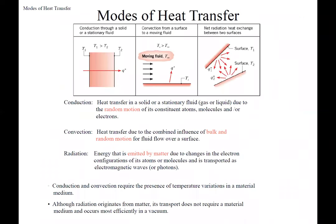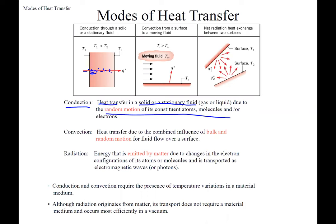The modes of heat transfer are conduction, convection, and radiation. Conduction is heat transfer in a solid or stationary fluid — the bulk motion is stationary, but at the molecular level there's random motion. That random motion transfers energy through the solid, which is our conduction heat transfer.